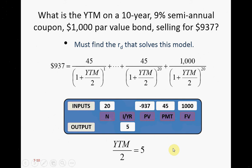If this is a numerical solving question on your test and your answer for yield to maturity is 5, you'll probably get about 90% of points. But if it's a multiple choice question and your answer is 5 instead of 10 for yield to maturity, you lose all your points. Just a reminder.